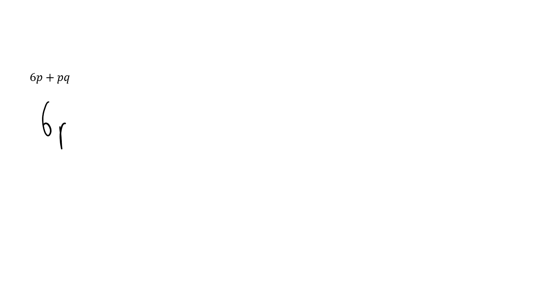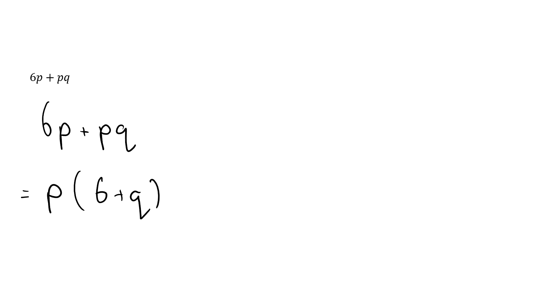Next we have 6p plus pq. This time there are no numbers, so we don't need to do the factor tree. When looking at this, same letters or pronumerals are also highest common factors. In this case we have p and p, so p is going to be our highest common factor. It goes out the front — removing one p from 6p leaves 6, and removing p from pq leaves q — giving us p(6 + q).